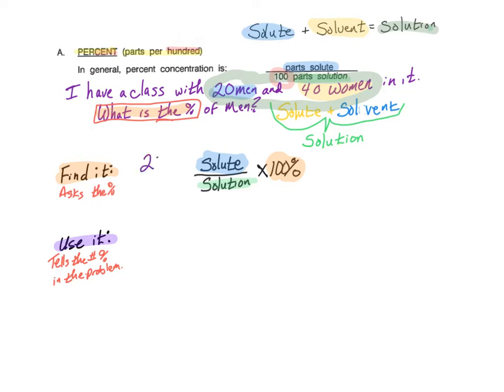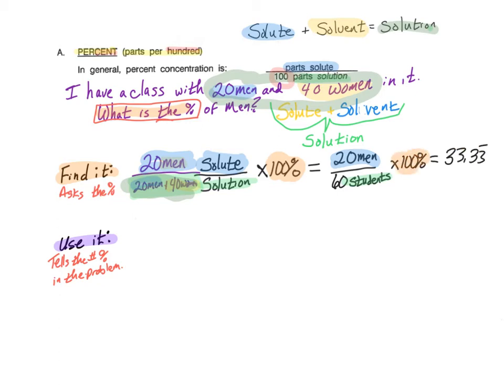So the solute was our 20 men, and the solution is our 20 men plus our 40 women. So again, we have our 20 men, which is our solute, and then we're going to divide that by our 20 men plus 40 women, which put together is your solution. That's the same as 20 men for every 60 students. And multiply by 100%. And our calculator says that is equal to 33.33 and it continues on. And that would be percent men.